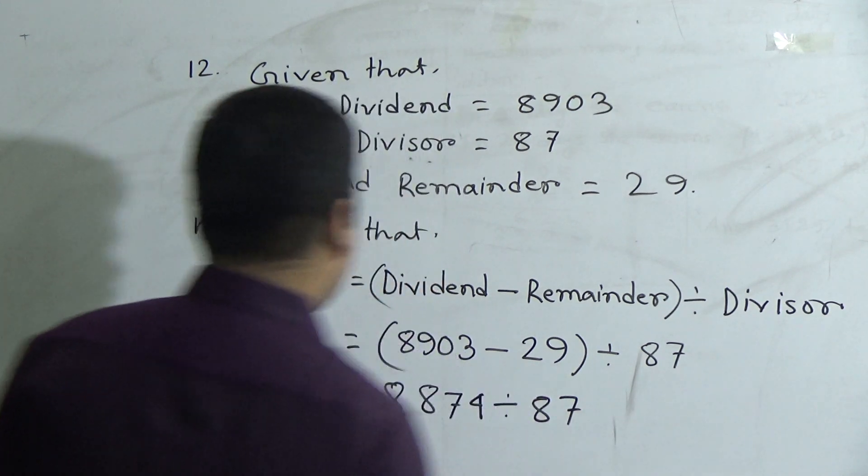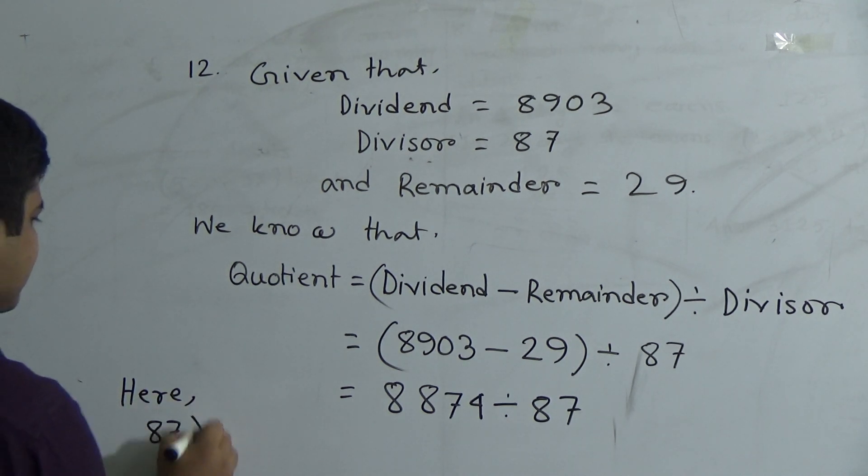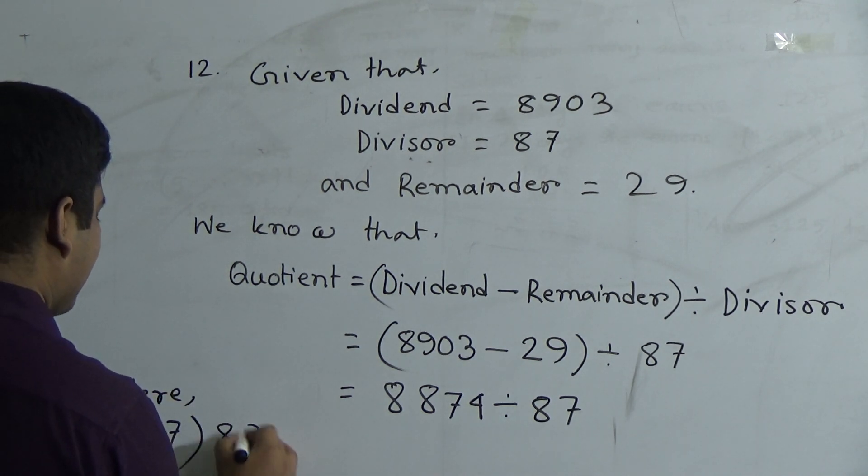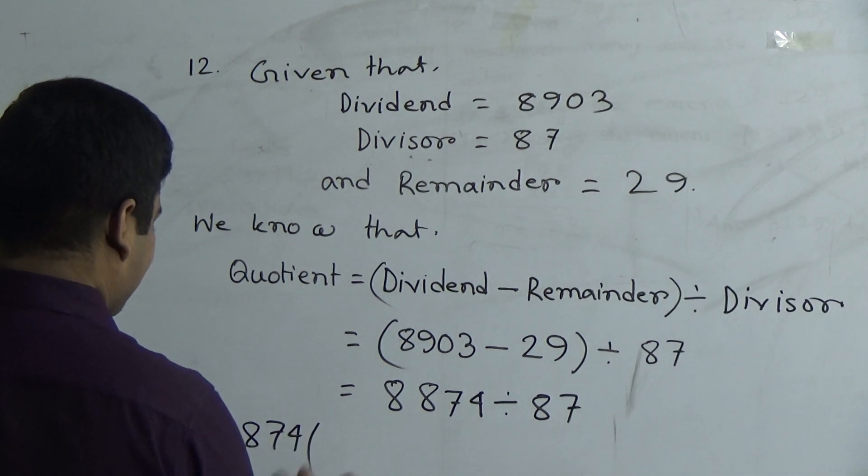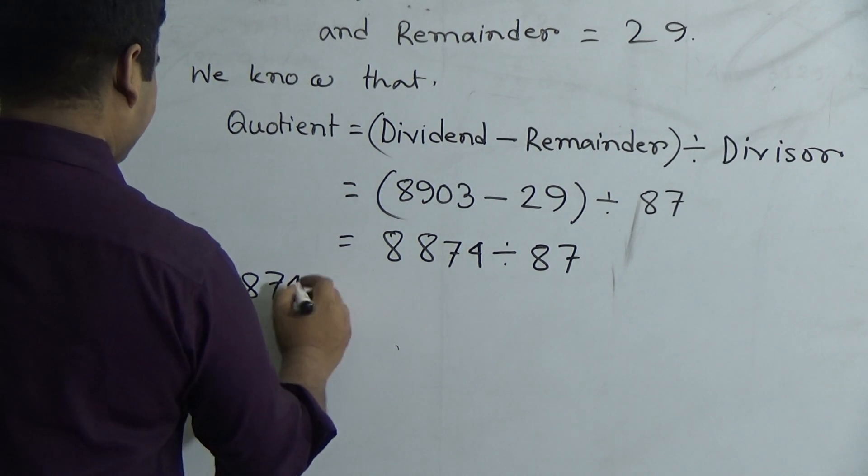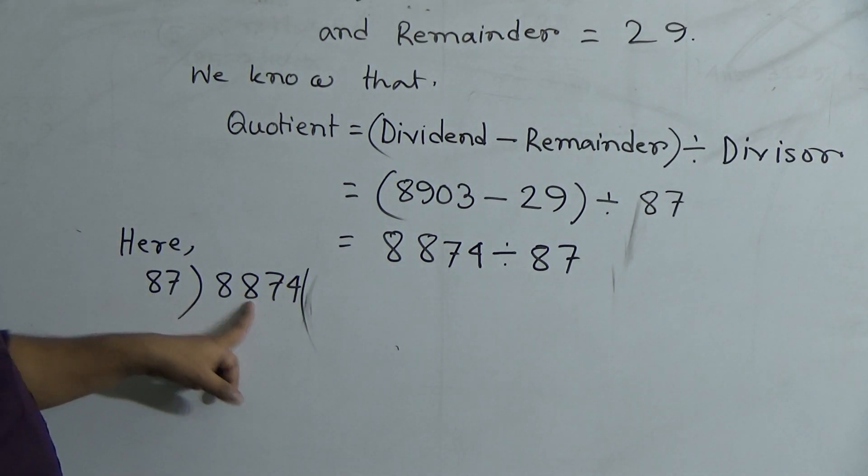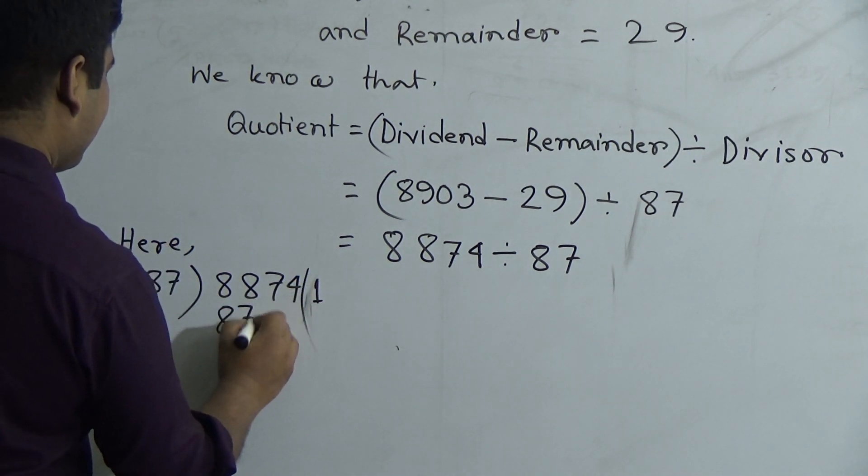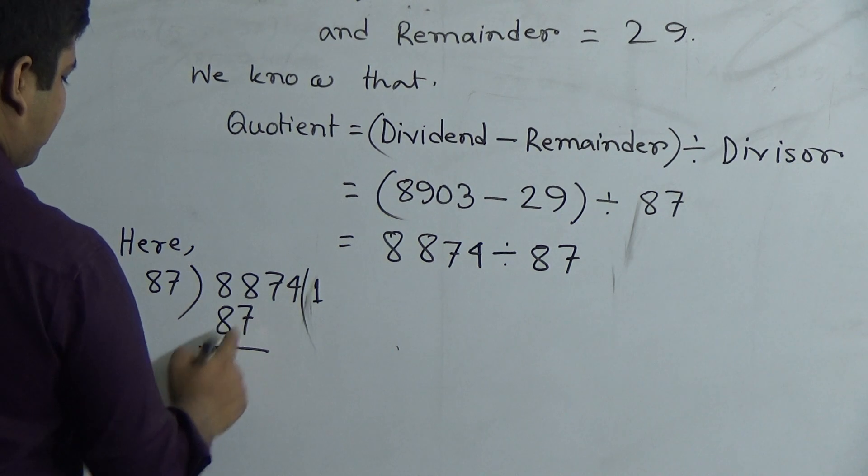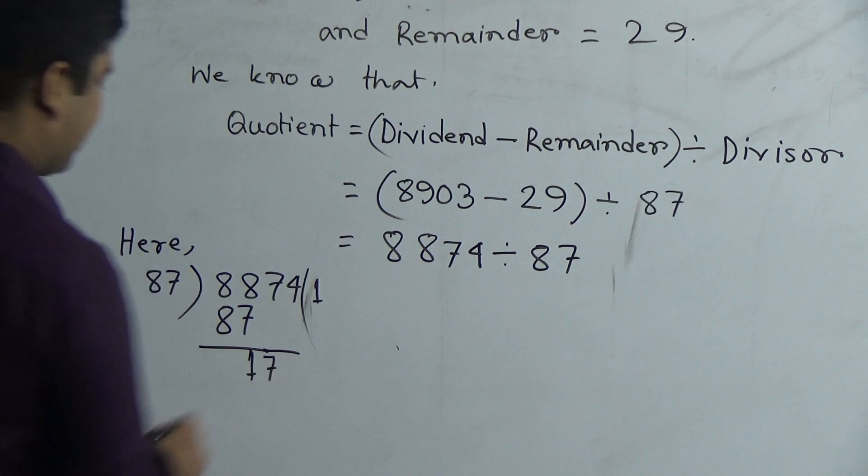Now, dear students, we do division. And you must write here, 87 divided by 8874. So my dear students notice. In 88, 87 goes in 1 times, that means 87. Now we subtract and we get 1. And 1 digit 7 is placed here.